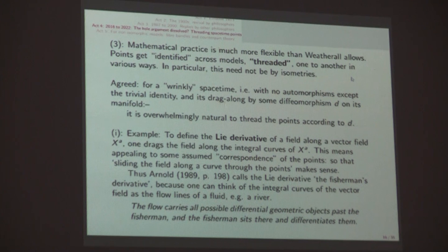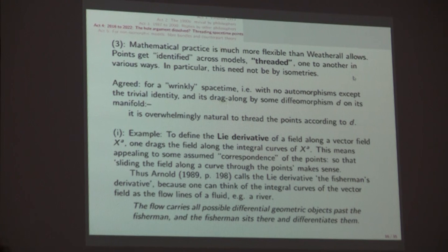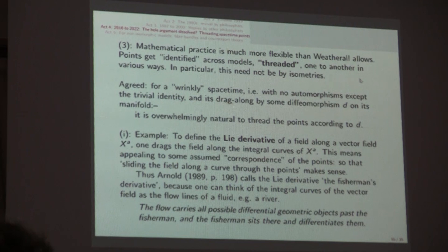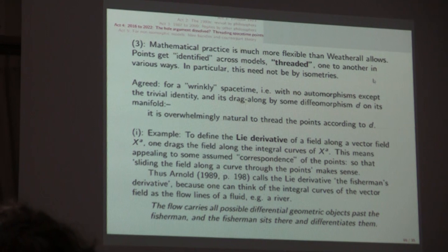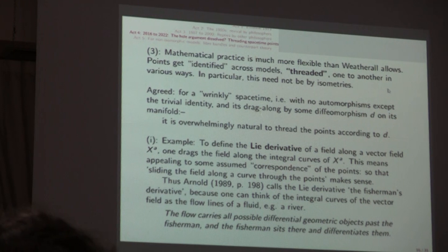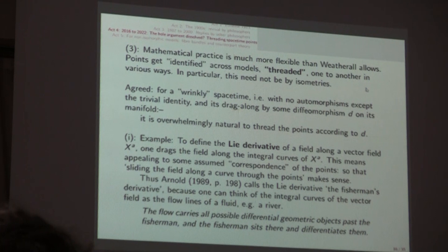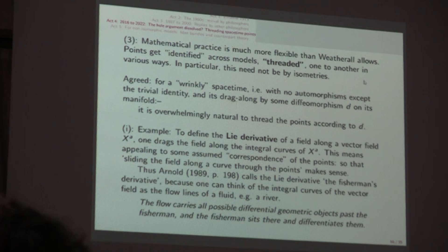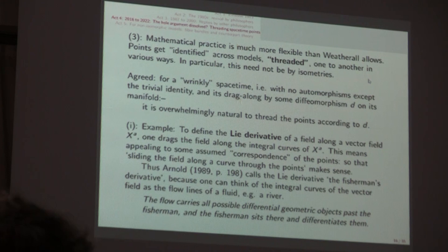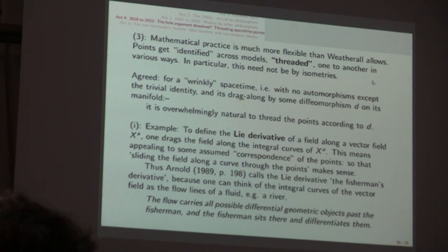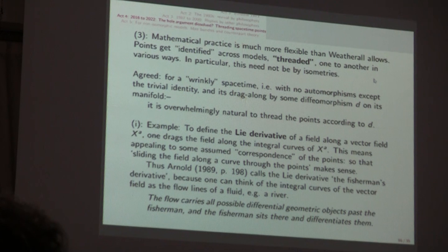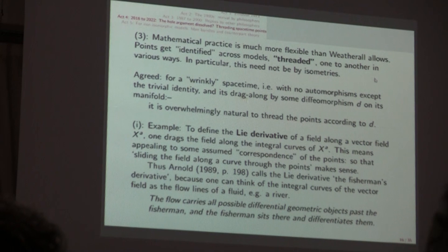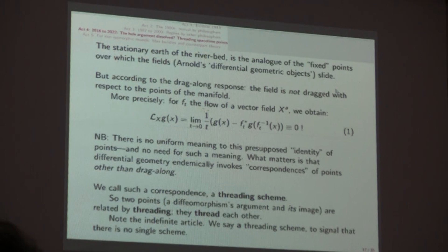Third comment, mathematical practice is much more flexible than Weatherall suggests. Points do get identified across models, threaded as we call it, one to another in various ways and it need not be by isometries. But I do agree, we do agree, that for a wrinkly spacetime, one with no automorphisms except the trivial identity, and it's dragged along by some diffeomorphism d, it is of course overwhelmingly natural to thread the points according to the diffeomorphism. I'm not denying that, but you see all sorts of contexts in which you don't thread by identity.